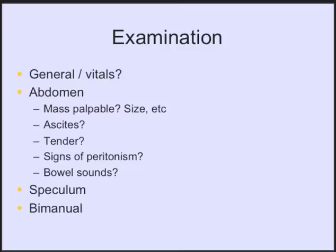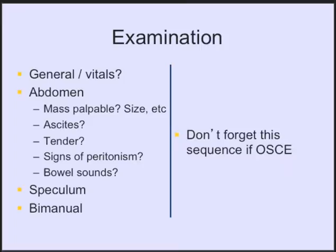For examination: always start with general observation and the vitals. Then examination of the abdomen — is the mass palpable? What is the size? How does it feel? Is the surface smooth or irregular? Is it mobile? Are there signs and symptoms of ascites? Is the palpation tender? Are there signs of peritonism such as rebound tenderness? What about the bowel sounds? Speculum and bimanual examination should complement the assessment. In an OSCE, always follow this sequence, or you might miss that the lady is anemic or hemodynamically unstable.